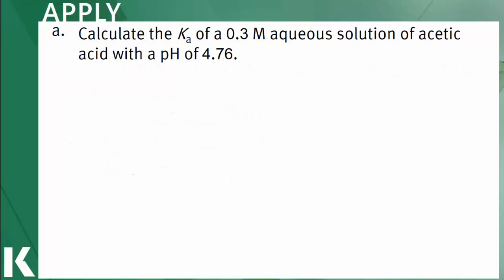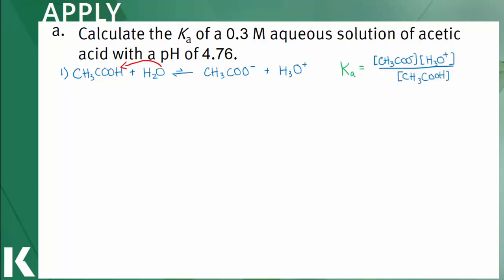Our first applied question asks us to calculate the Ka given the concentration of acid and a pH, which means we need to use the first method described earlier. The first step is to create the dissociation reaction of acetic acid in water: acetic acid will donate a proton to water to form the acetate anion and the hydronium cation. The Ka expression will be the concentration of products over the concentration of the reactant, excluding water.